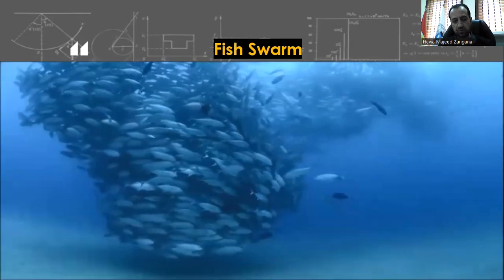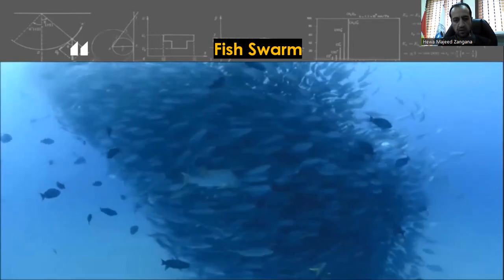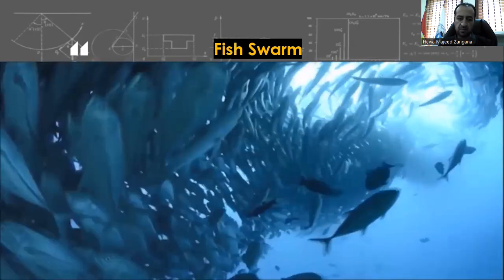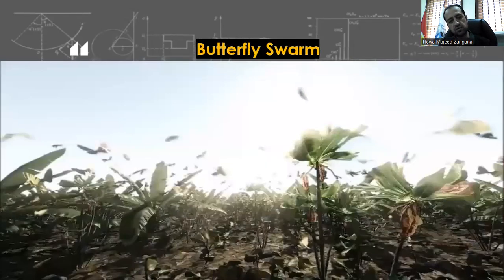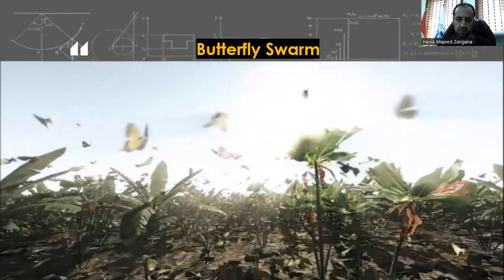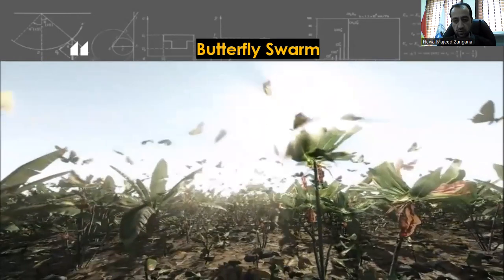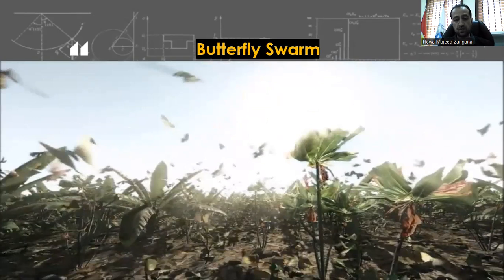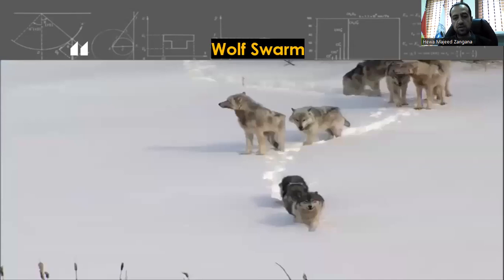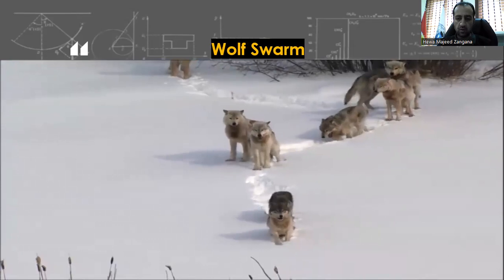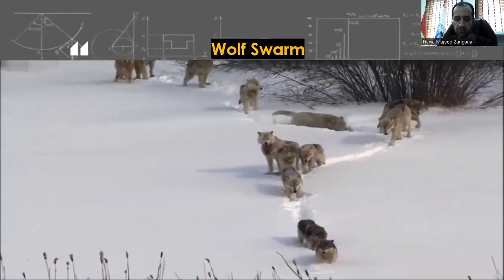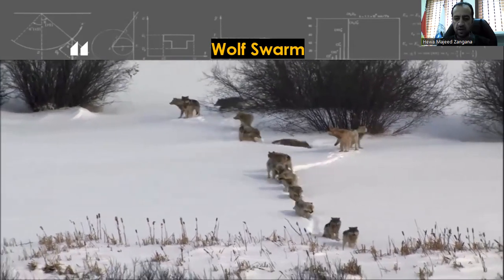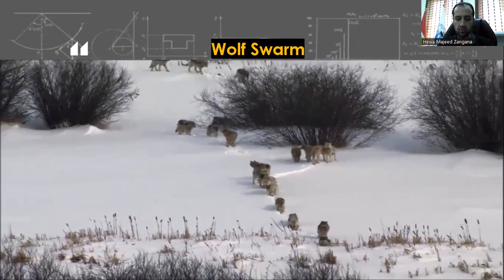There is also the fish swarm, which you can see in this short movie — how fish live in such a way to defend against any attack that comes to them. We have also another example of the butterfly swarm: how all those butterflies live in groups and work together. All of them are examples of swarm in nature. There is also the wolf swarm — wolves live in groups, and you can see how they all go behind each other and follow the guidance of the first one, who guides them.